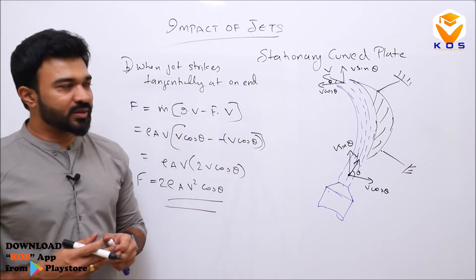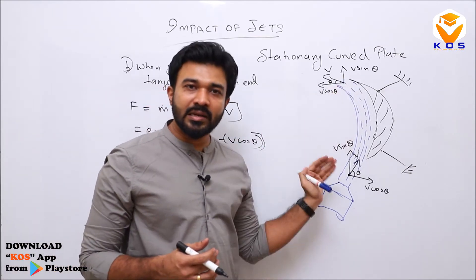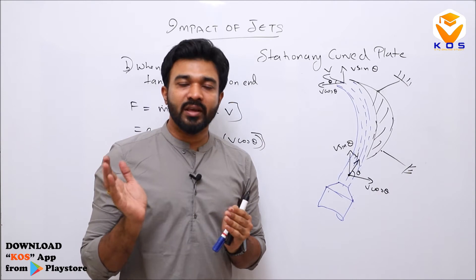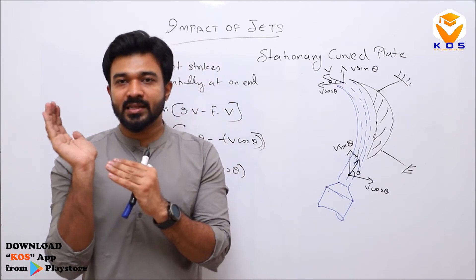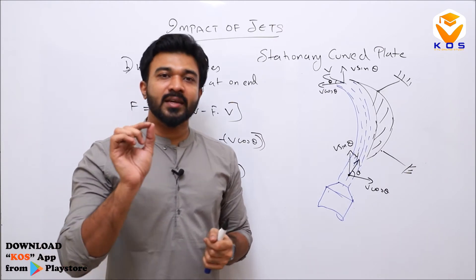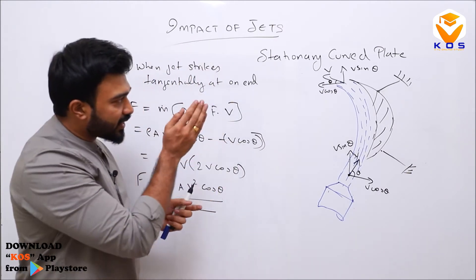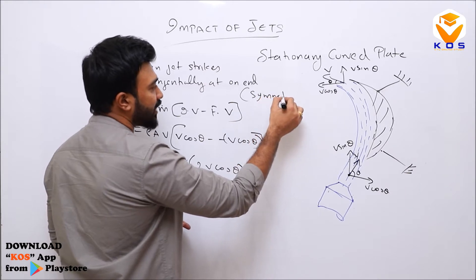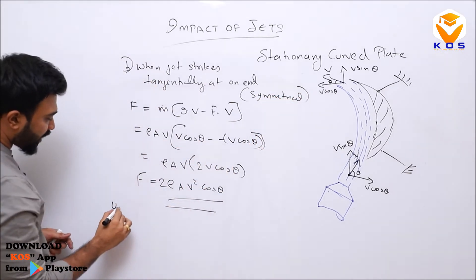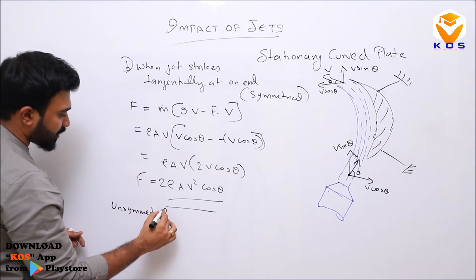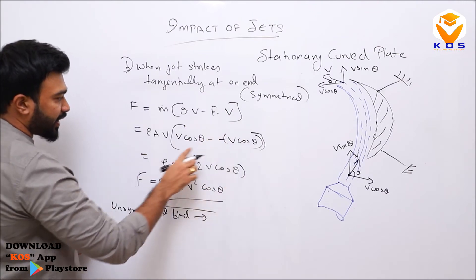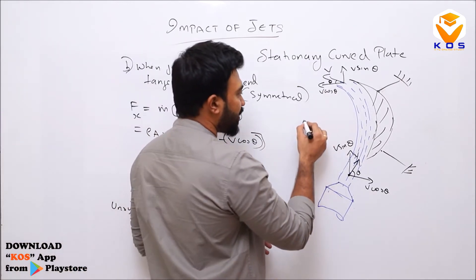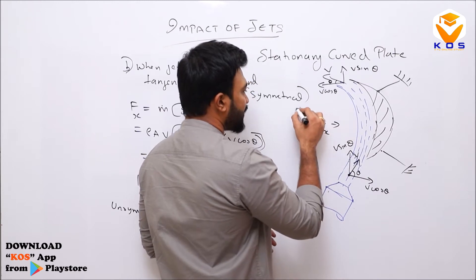In this case, we also have a special condition. If the blade has two different angles at inlet and exit — that is an unsymmetrical blade. For a symmetrical blade the inlet and exit angles are equal. For an unsymmetrical blade, we cannot directly add the components; we need separate Fx and Fy components.